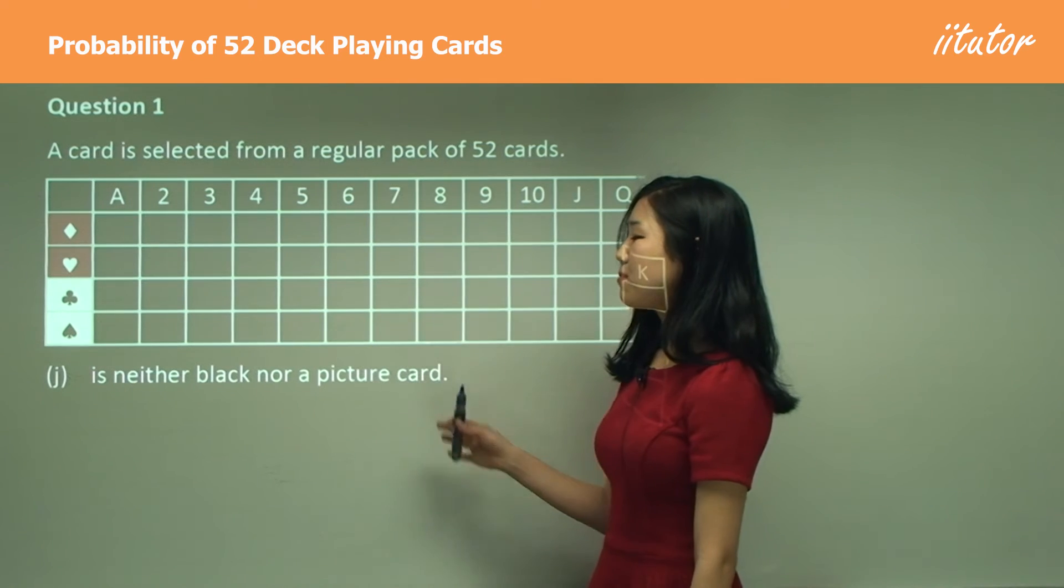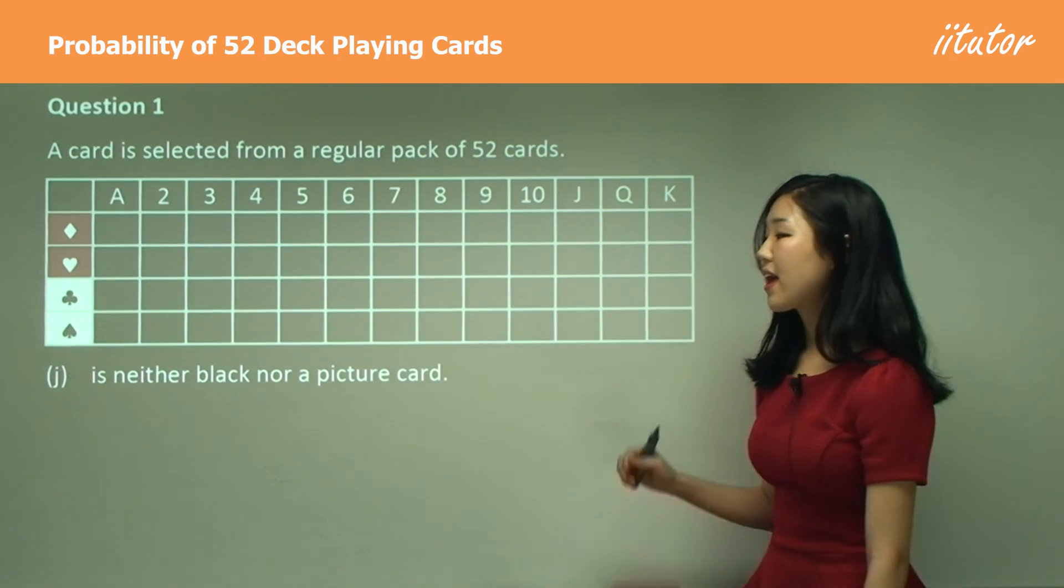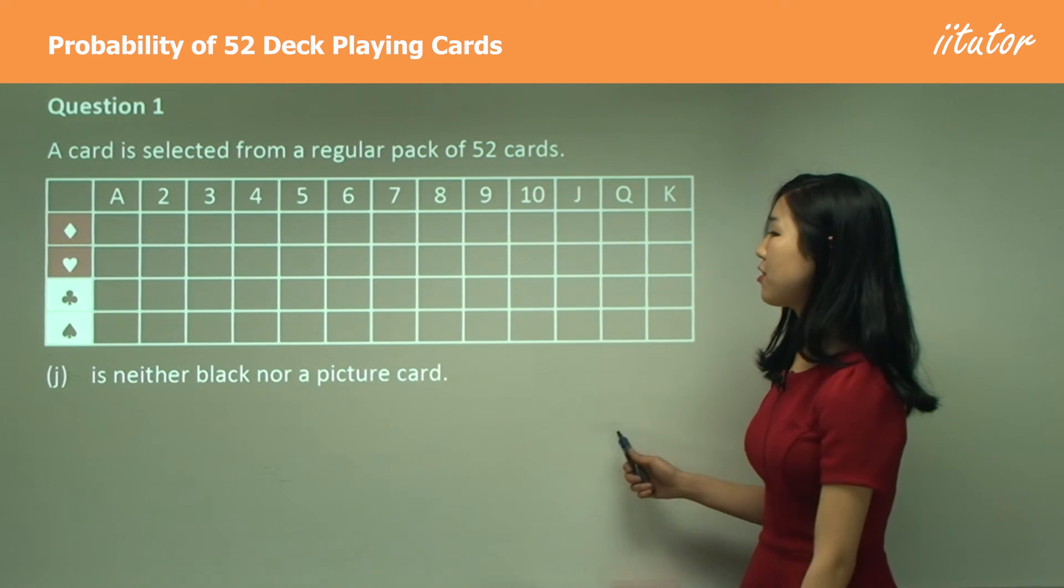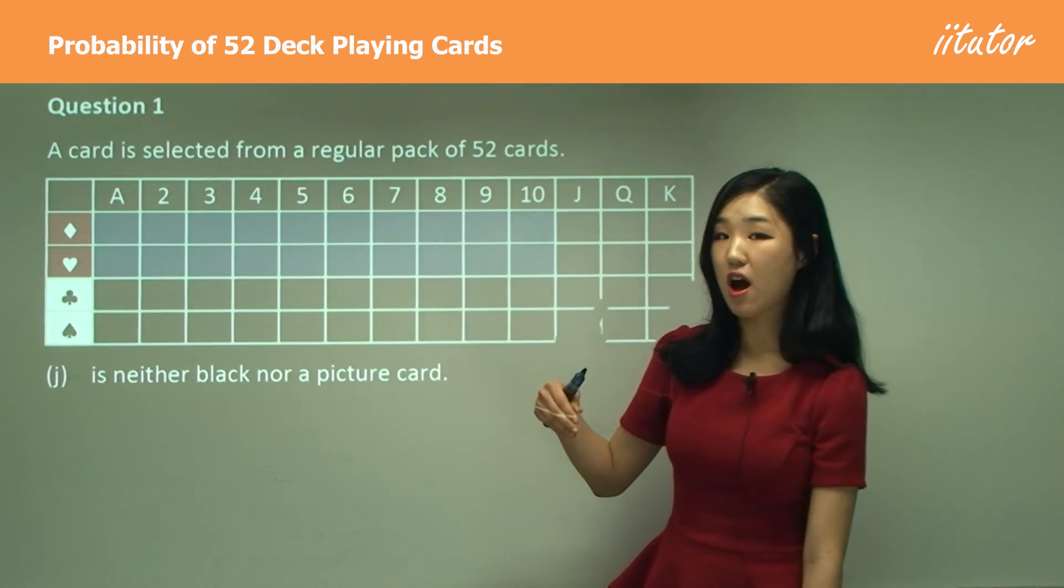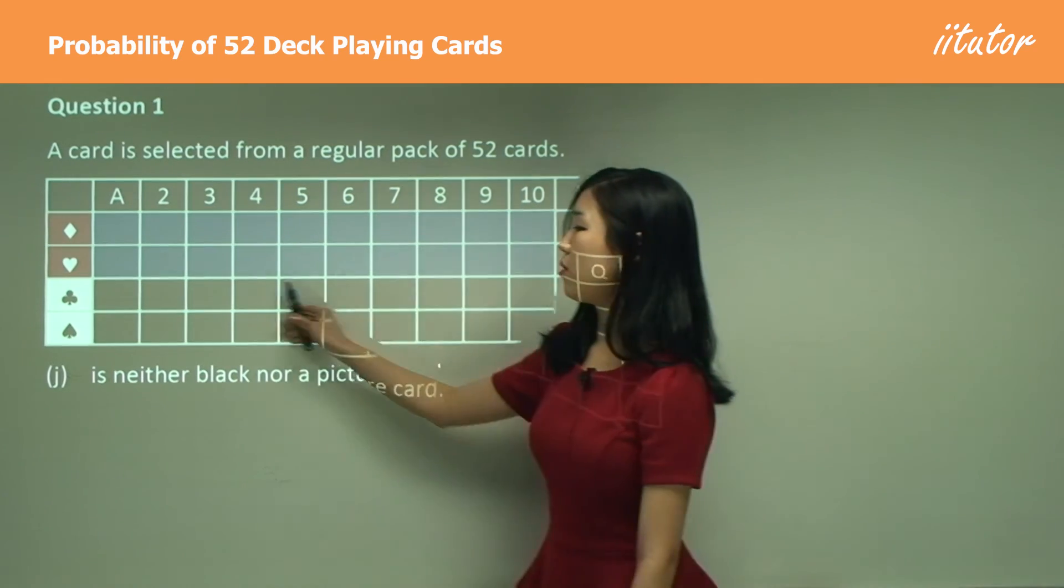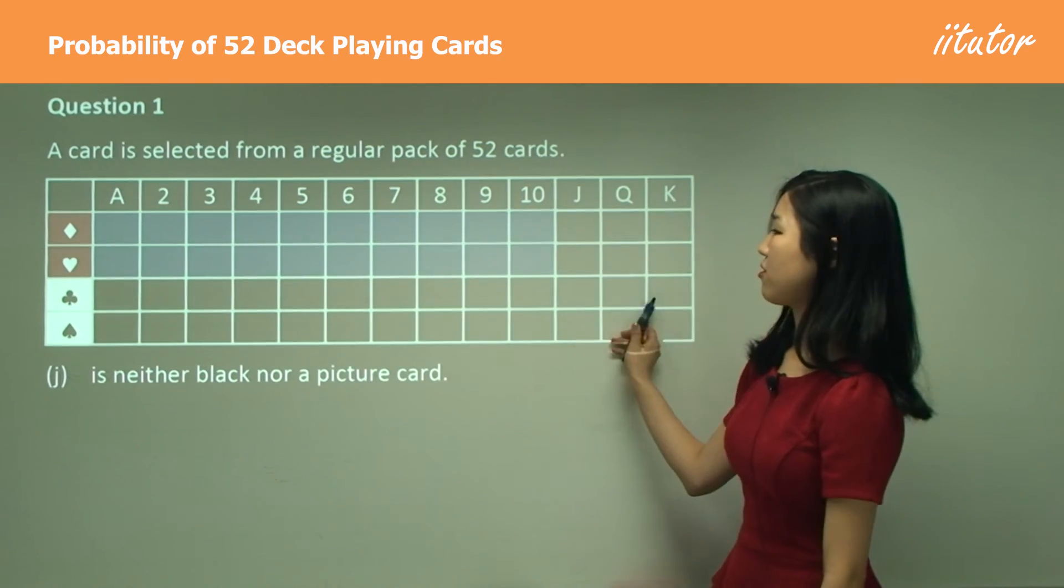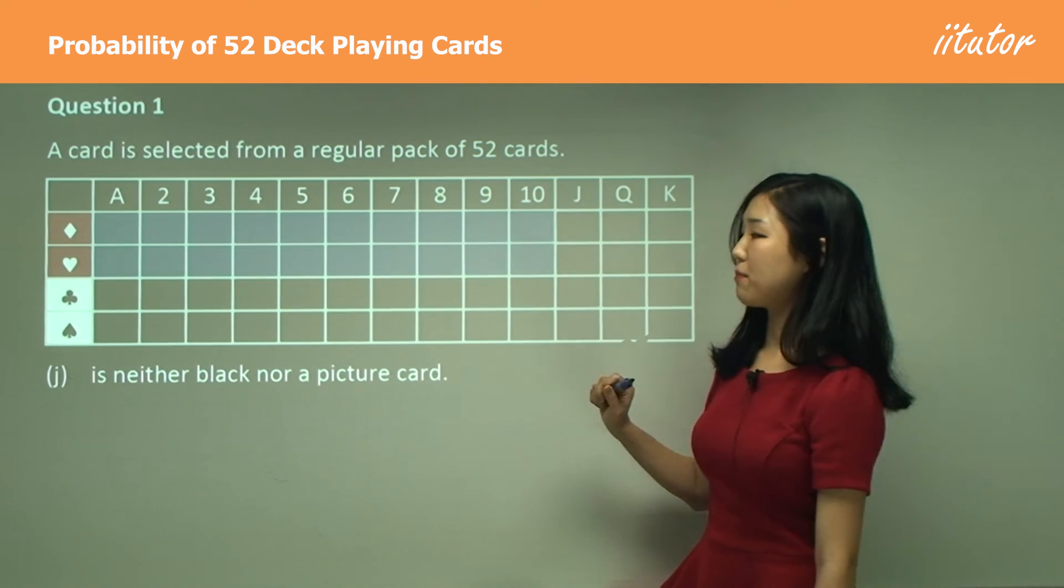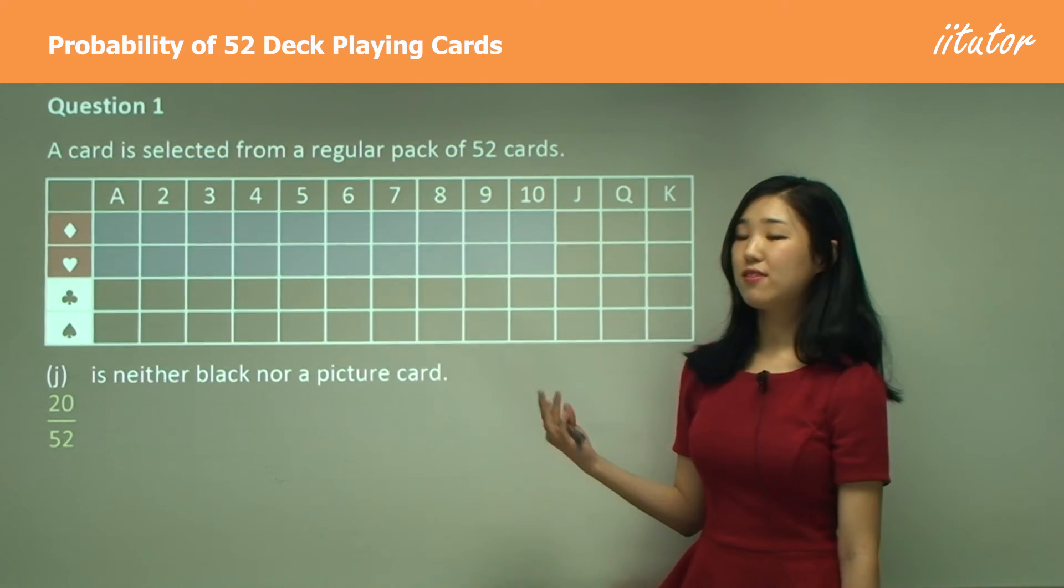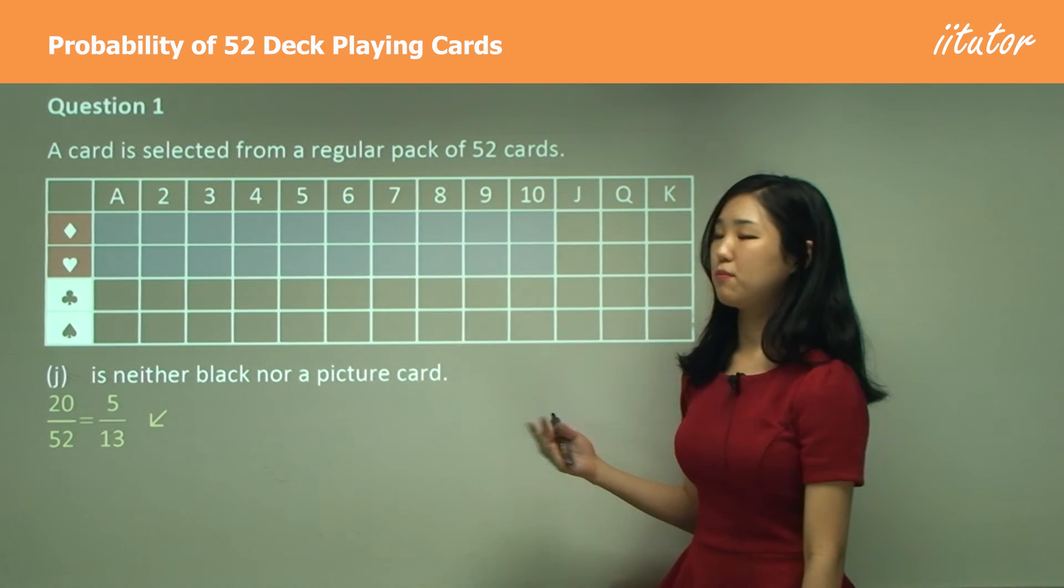Part j: Finally, neither black nor a picture card. It cannot be black or a picture card, so it must be anything else apart from the stuff that we had in the previous question. It can't be black at all and it can't be any of the picture cards, so it must be the remaining—this part here. Count them up and you get 20. So it's 20 out of 52, which is simplified to 5 over 13.